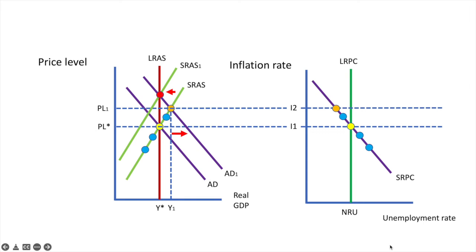The new price level is PL-2 and real GDP returns to Y-star, which corresponds to the natural rate of unemployment. We return to the long-run Phillips Curve at the natural rate of unemployment at a higher rate of inflation, I3.